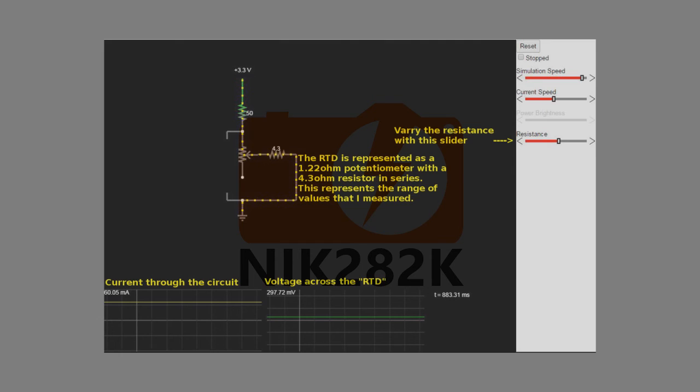I'm simulating the RTD using a variable resistor with a fixed resistor in series. This limits the values to the ones that I measured. At the bottom, you can see the current through the circuit measured and the voltage across the simulated RTD.